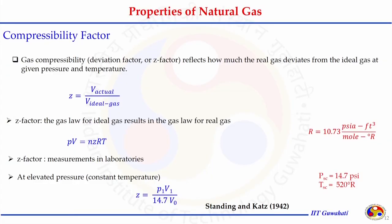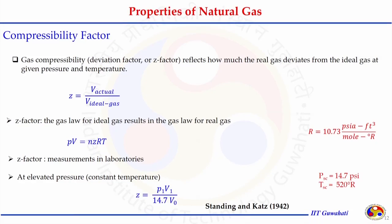Another important property is the compressibility factor. The compressibility factor is the property of a natural gas that shows how much deviation natural gas has from the ideal gas. In very short terms, the compressibility factor reflects how much the real gas deviates from the ideal gas at a given temperature and pressure. Compressibility factor depends on temperature, pressure, and also the composition of the natural gas.